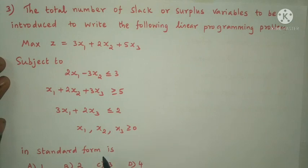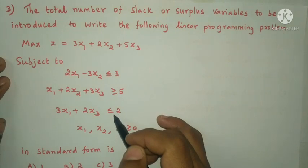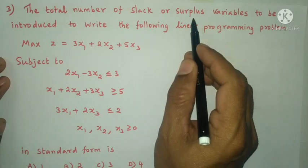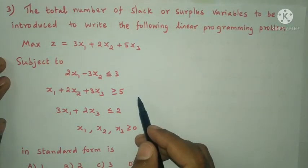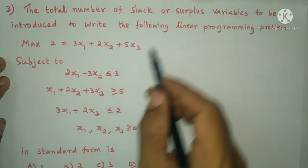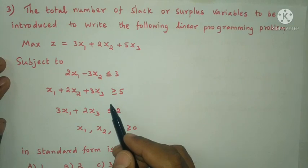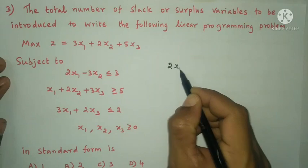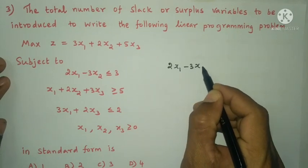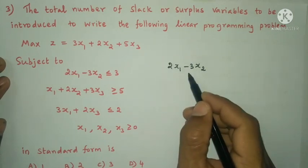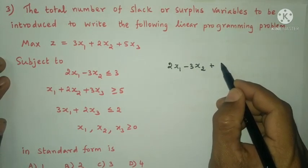In the standard form, inequality constraints are converted to equalities by adding slack or surplus variables. A slack variable is added when the constraint is less than or equal to. A surplus variable is subtracted when the constraint is greater than or equal to. The first constraint, 2x1 minus 3x2, is of the less than or equal to type, so one slack variable s1 is added.